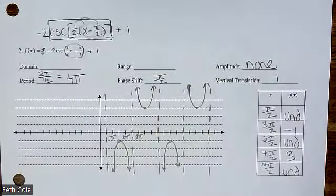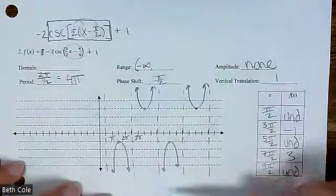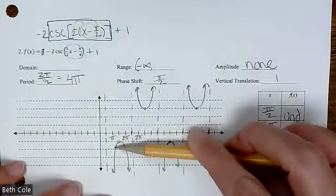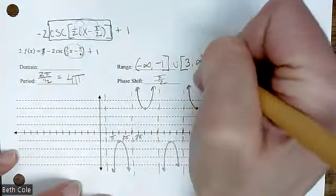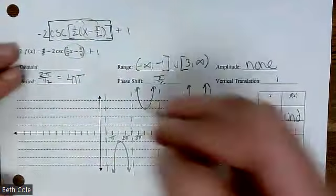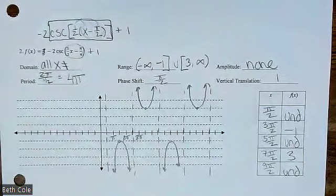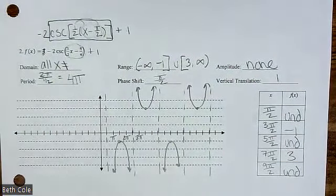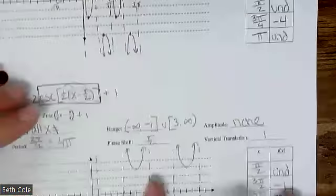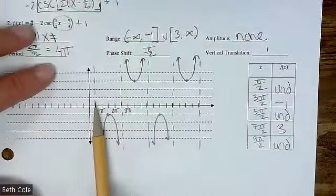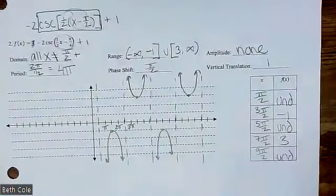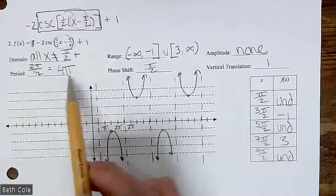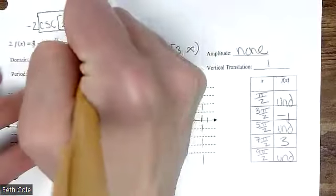Go back and do the range first — it's a little bit easier. It'll be negative infinity up to negative one, then union, three to infinity. And then your domain is everything except where the asymptotes are — it's the first one plus however often they happen, which is going to be half the period. Where's the first asymptote? Pi over two, plus two pi N.